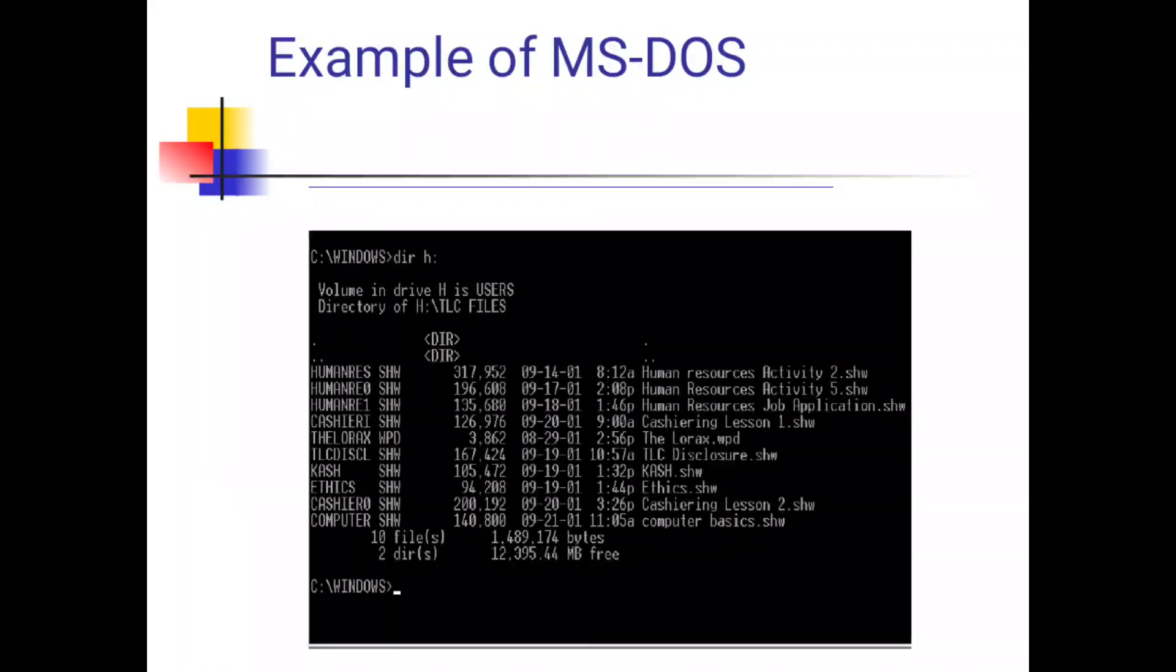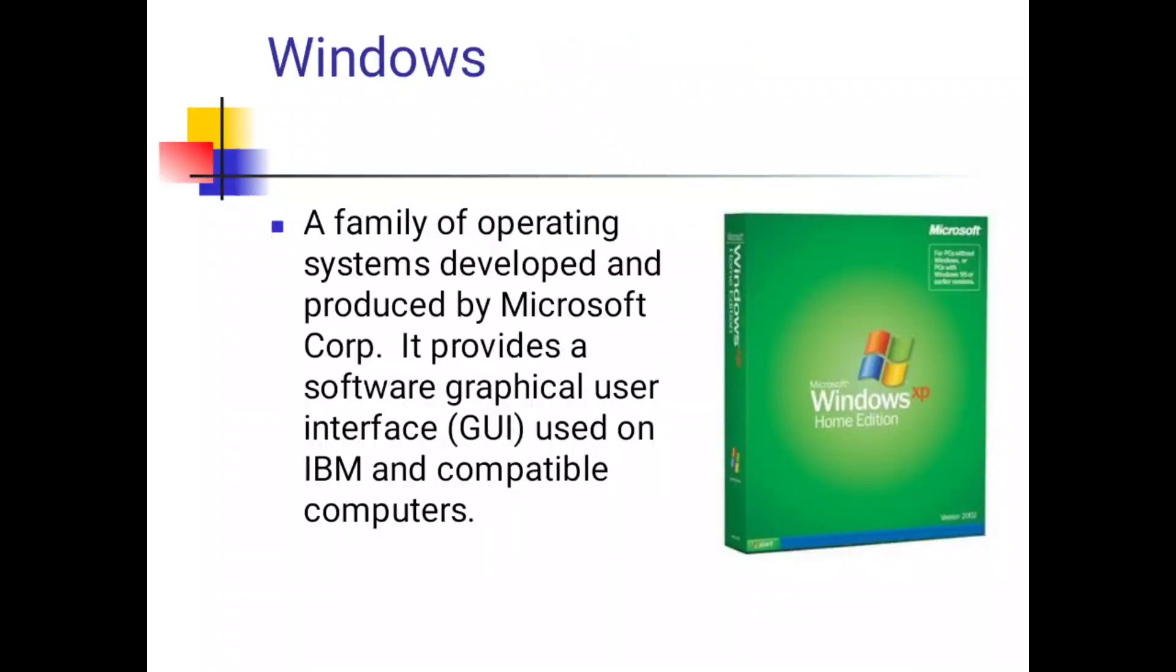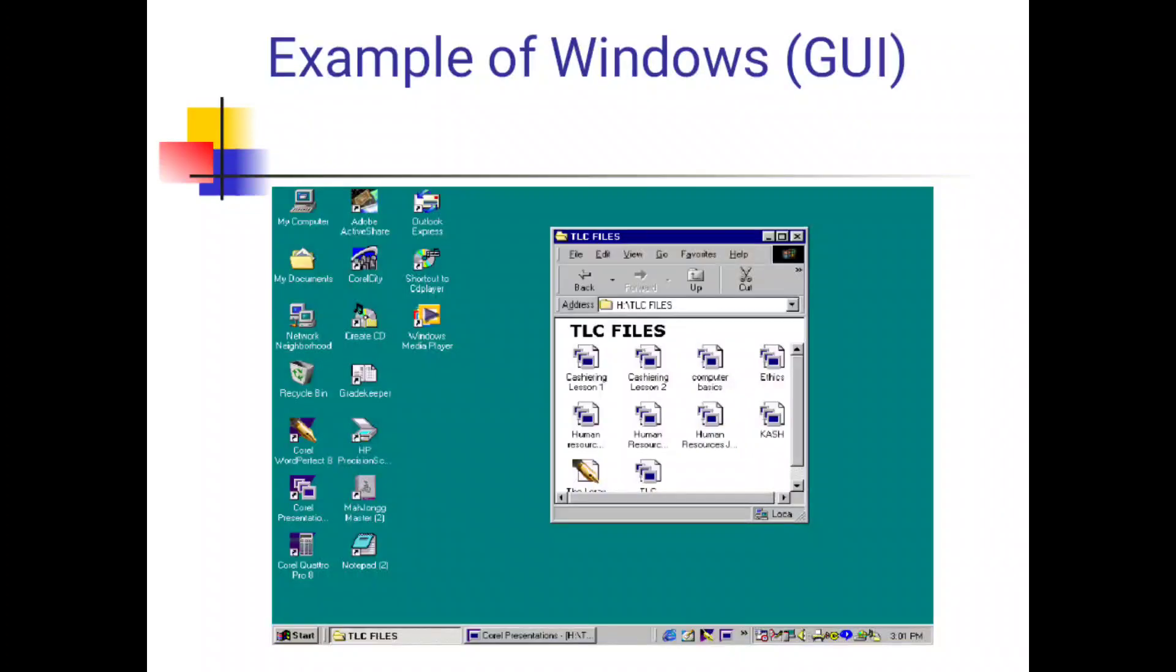Windows: a family of operating systems developed and produced by Microsoft Corp. It provides a software graphical user interface (GUI) used on IBM and compatible computers. Example of GUI, graphical user interface.